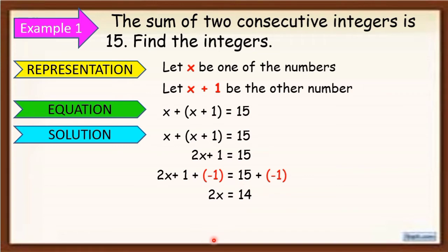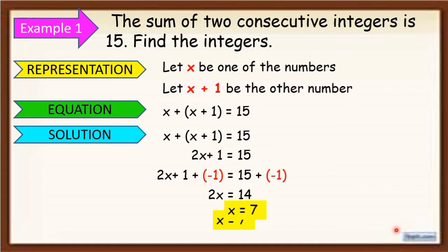Now we apply the multiplication property of equality. Divide both sides by 2 to isolate x. So 2x divided by 2 gives x, and 14 divided by 2 is equal to 7. The final answer is x is equal to 7. We already know the value of x which is 7.